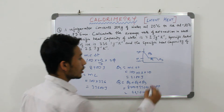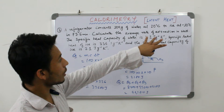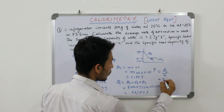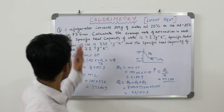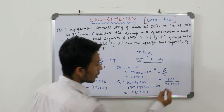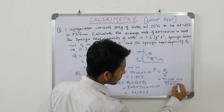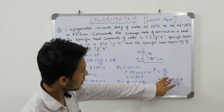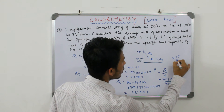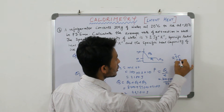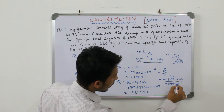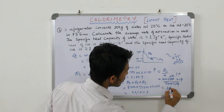We need to find the average rate of extraction, that is power. Power = Q / T = 44100 / (73.5 × 60) = 44100 / 4410 = 10 watt.